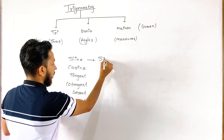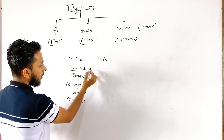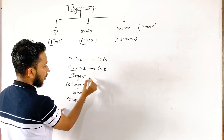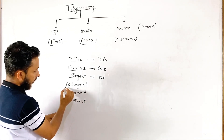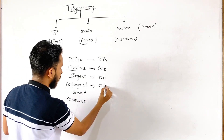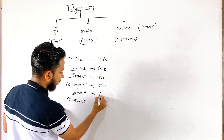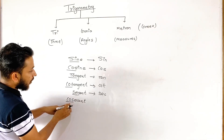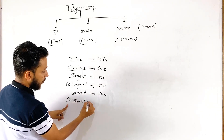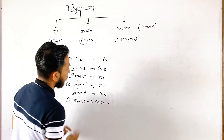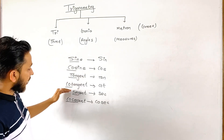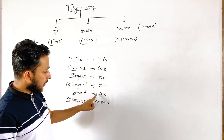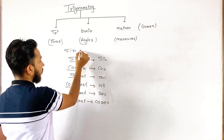We also write them in short form. Sine is written as 'sin'. Cosine in short form is 'cos'. Tangent in short form is 'tan'. Cotangent in short form is 'cot'. Secant in short form is 'sec'. For cosecant, if you write just the first three letters it becomes 'cos', which is already used, so we use the first five letters, giving us 'cosec'. So the six trigonometric ratios and their short forms are: sine (sin), cosine (cos), tangent (tan), cotangent (cot), secant (sec), and cosecant (cosec).